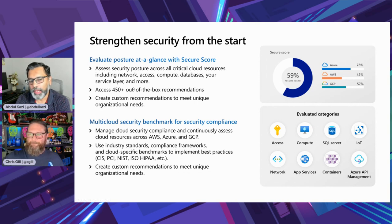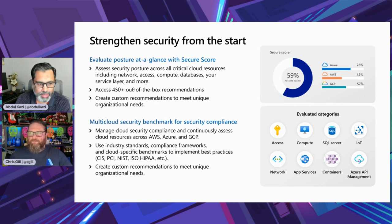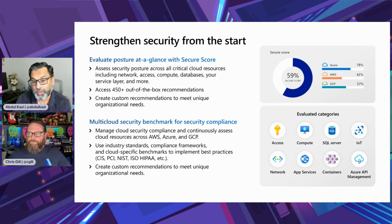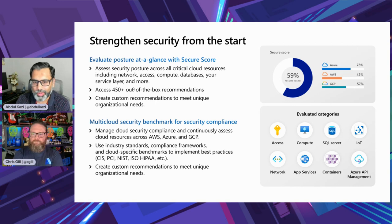Strengthening security from the start: Microsoft Security Score is part of the security posture, which also shows recommendations, anything overdue or unassigned. The security score is shown across multiple clouds — Azure, AWS, and GCP. The Defender overview pane in the Azure portal also shows regulatory compliance — your environment is benchmarked against the Azure Security Benchmark. It might say you passed 33 out of 40 controls.